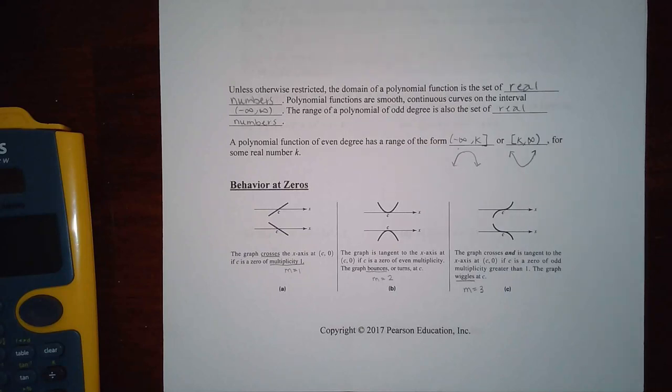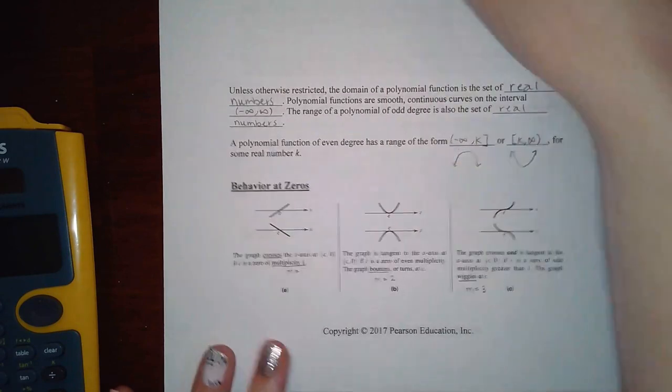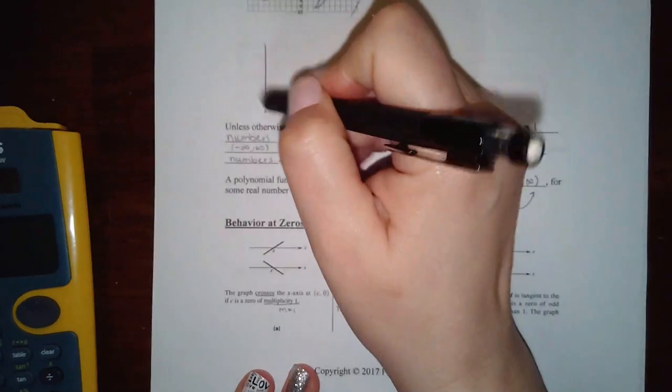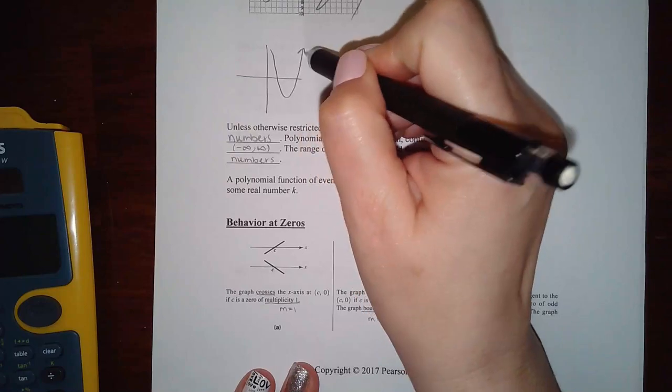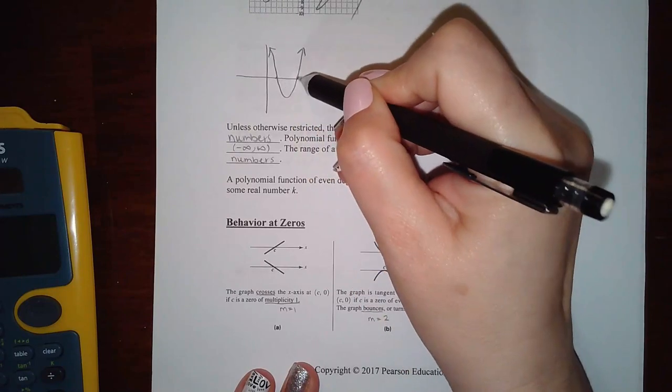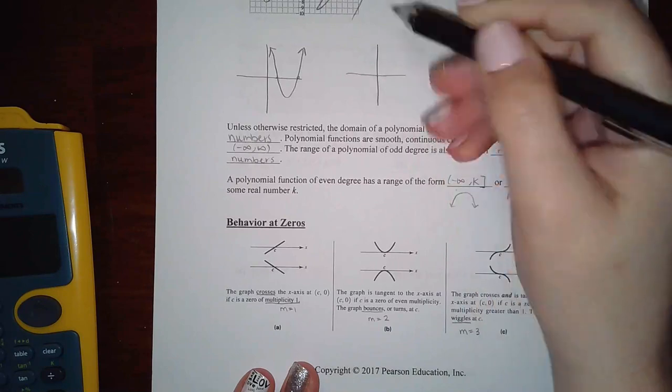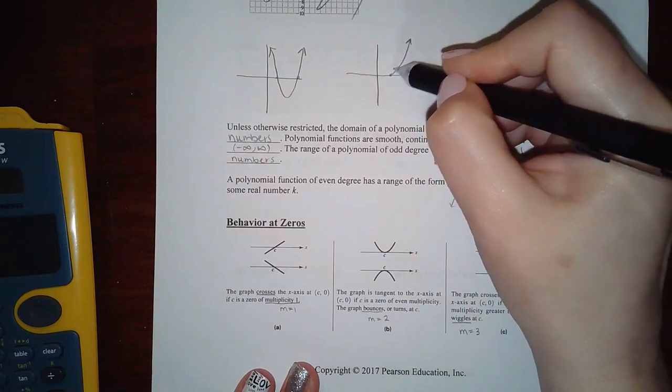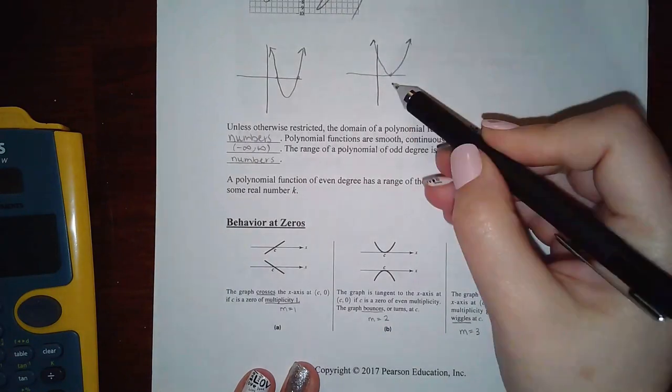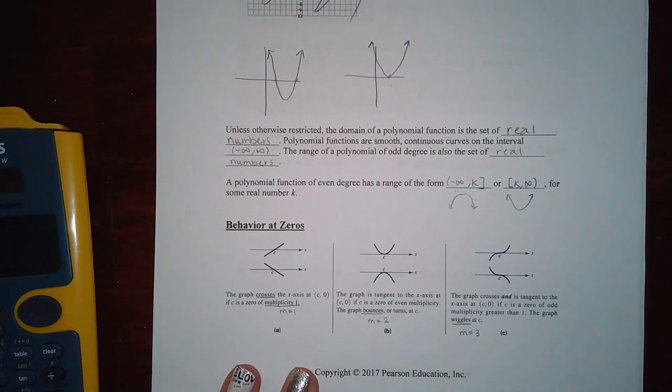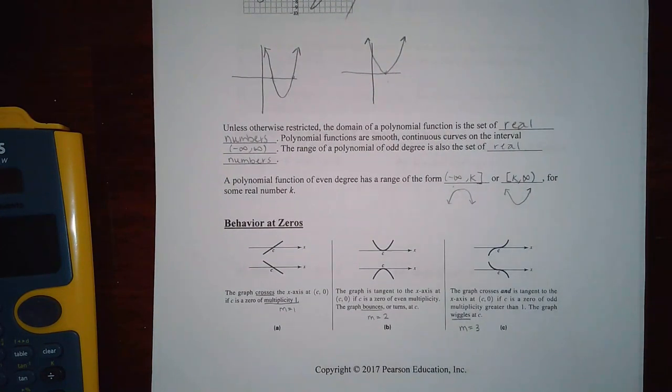Okay, so now we get into what's called the behavior at zeros. So before we've always had x-intercepts and for lines when you have an x-intercept you cross right through the x-intercept and then for a polynomial, a quadratic, it depended. If your x-intercepts were like this, then you went through that x-intercept and you went through that x-intercept. But if you happen to have a parabola that just touched the x-axis like this, then it had a different kind of behavior at the x-axis.